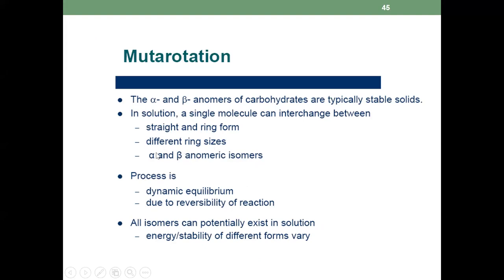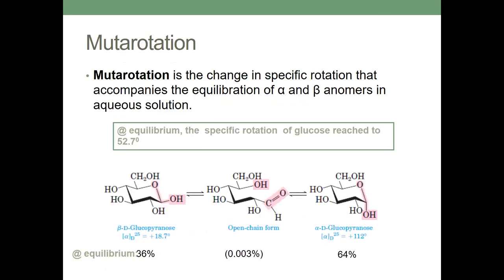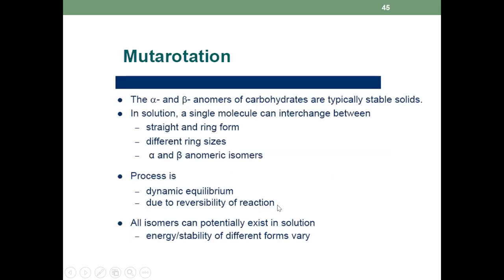Just like ribose, a five-membered ring can also be obtained in some cases. At equilibrium, all isomers can exist: the alpha, the beta, the straight chain, and the cyclic. But the straight chain is almost negligible in solution. Mutarotation is always a dynamic equilibrium — a reversible process.